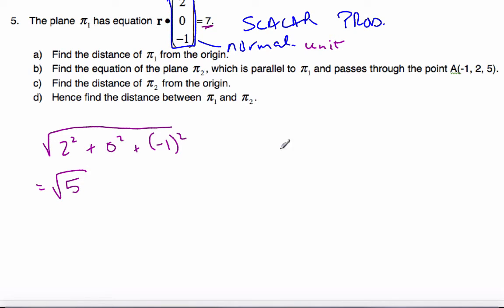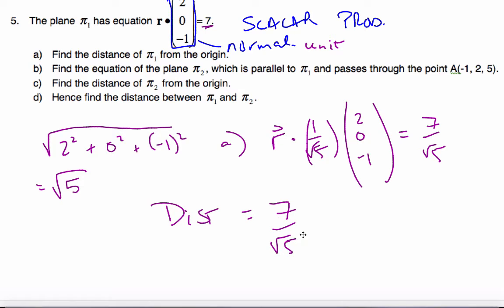And so if I take this equation and rewrite it, I get r dot 1 over root 5 times 2, 0, minus 1. If I multiply this side by 1 over root 5, I multiply this side by 1 over root 5. And so the distance to the origin is equal to 7 over root 5, which is 7 root 5 over 5 units.